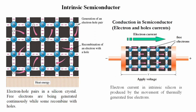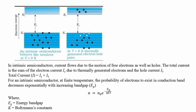When an electric field is applied to an intrinsic semiconductor at a temperature greater than zero K, the conduction electrons move to the anode and the holes move to the cathode. An empty state in the valence band is referred to as a hole. Hence semiconductor current consists of movement of electrons and holes in opposite directions. In intrinsic semiconductors, current flows due to the motion of free electrons as well as holes. The total current is the sum of the electron current Ie and the hole current Ih.